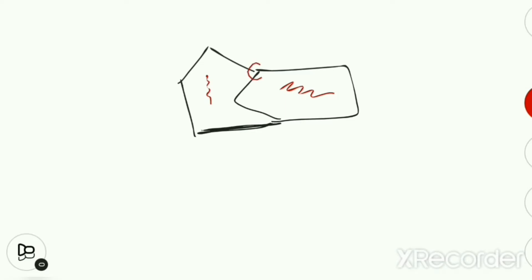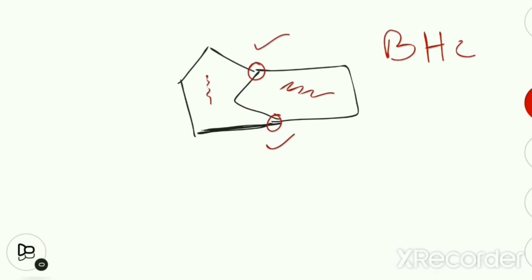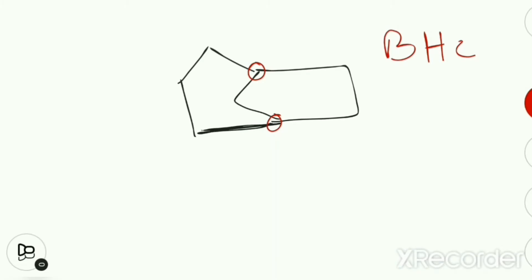Here is another example of a Bicyclic compound — ring A and ring B. These two rings are joined by 2 carbon atoms. Whenever two ring systems are joined by at least 2 carbon atoms, this is a Bicyclic compound. Here in this picture, between the two Bridge Headed Carbons there is one additional carbon.